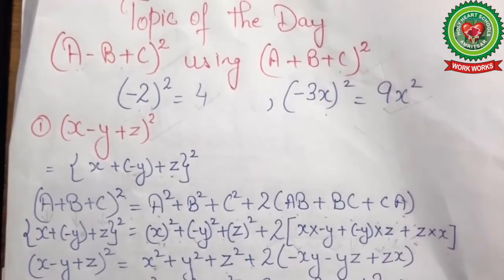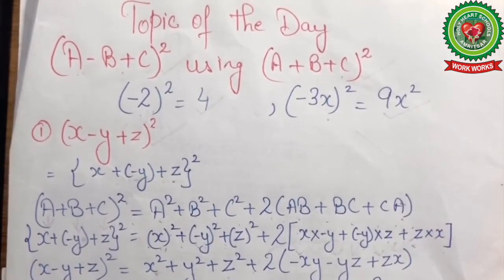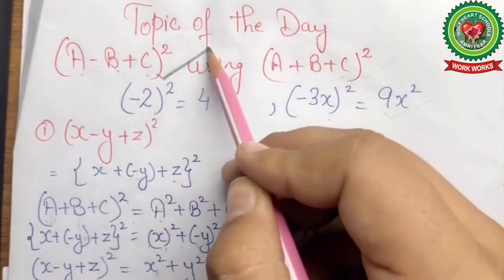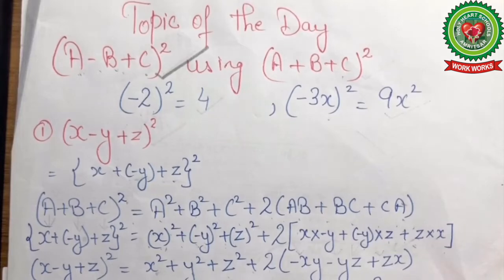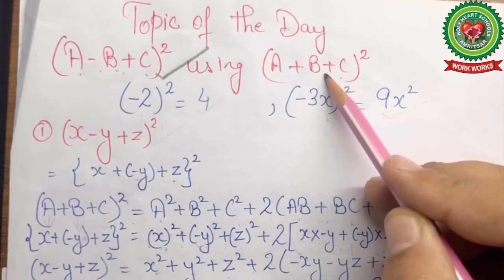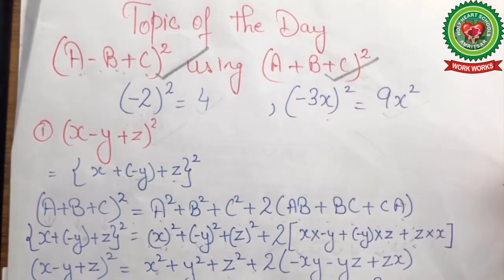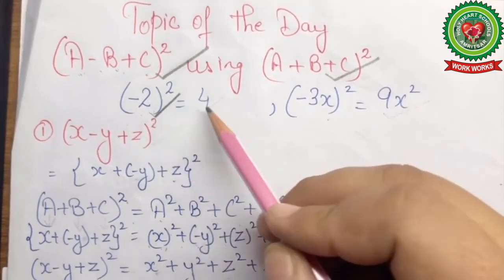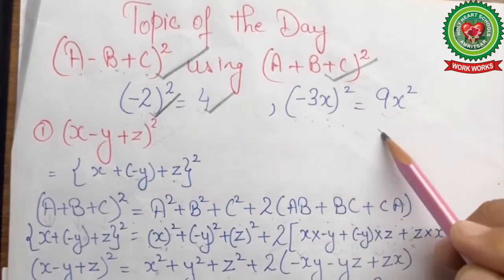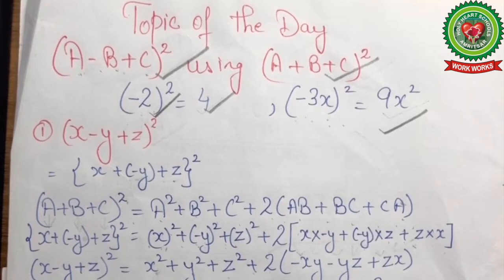The first application we are going to discuss is (a - b + c)², and we are going to solve this using (a + b + c)². Before starting, let's have a recap: the square of -2 is +4, the square of -3x is 9x². We need to remember that the square of any negative number is always a positive number.